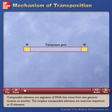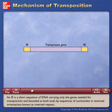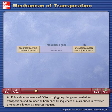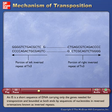Transposable elements are segments of DNA that move from one genomic location to another. The simplest transposable elements are insertion sequences, or IS elements. An IS is a short sequence of DNA carrying only the genes needed for transposition and bounded at both ends by sequences of nucleotides in reversed orientations, known as inverted repeats.